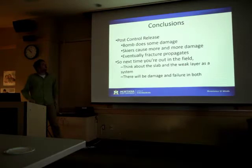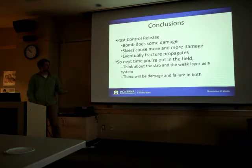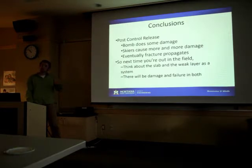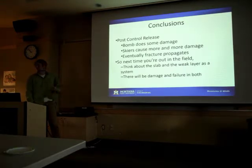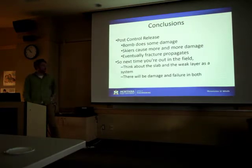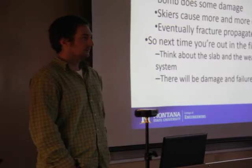Just spitballing, but this damage accumulation idea may be a way to look at post-control avalanche releases. You throw a bomb on the slope and it doesn't go, but you've definitely damaged the snowpack and broken a lot of bonds. Maybe it seems stable, some skiers go down, and as you're skiing you're damaging a few more bonds. Eventually that unlucky skier does just enough damage to trigger the slide. The takeaway for practitioners: next time you're out in the field, think about the slab and weak layer as a system that has to accumulate enough damage to fail - there will be bond breakage and failure in both.